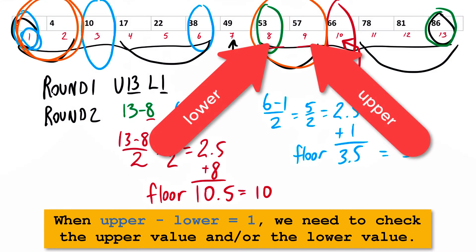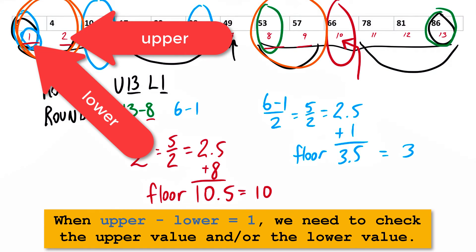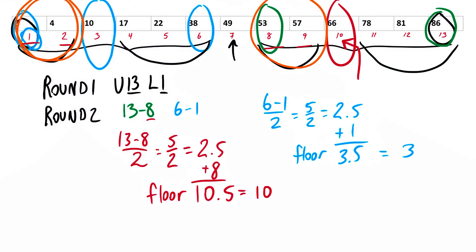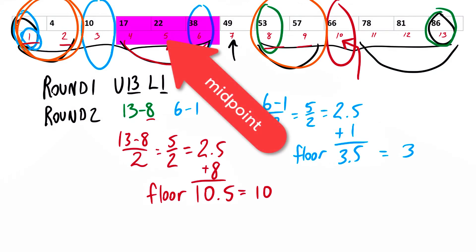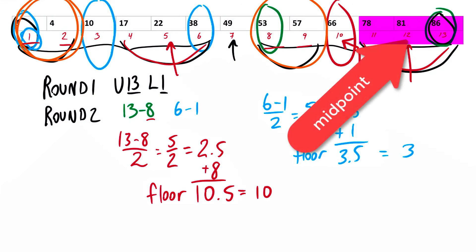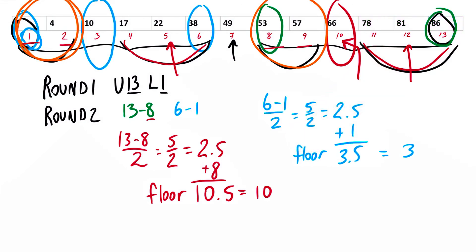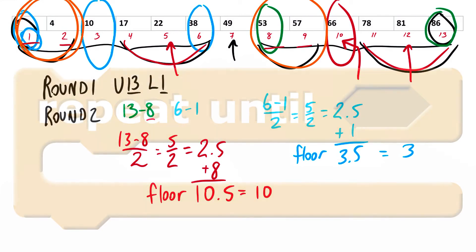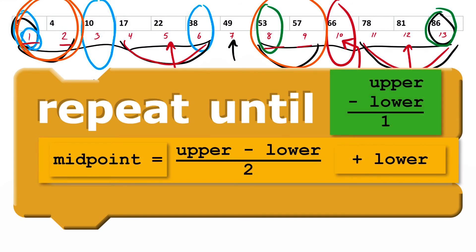So if I subtract 9 and 8 and get 1, or subtract 2 and 1 and get 1, then it's time to look at both values because we've narrowed down our search to just two. Otherwise, we keep using the formula to determine the midpoint. If we're looking at 4 through 6, our formula gives us position 5. If we're looking at 11 through 13, our formula gives us position 12. My plan already sounds like a loop — specifically a repeat-until block.